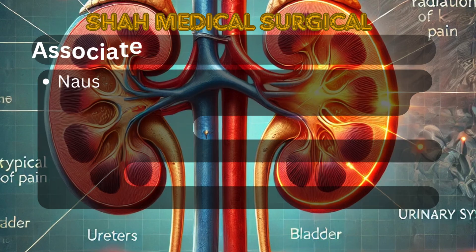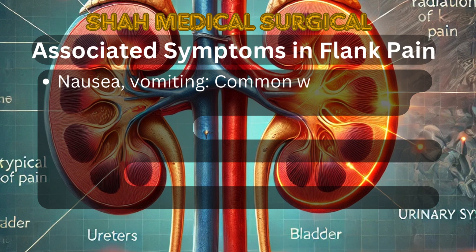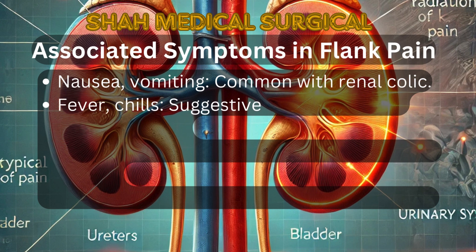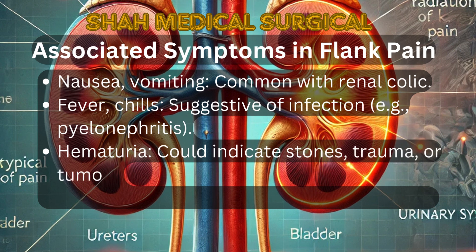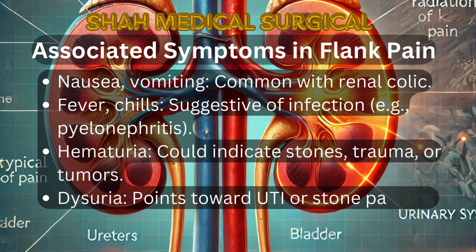Associated symptoms to ask about include nausea and vomiting, which are common with renal colic. Fever and chills may indicate an infection like pyelonephritis. Hematuria can suggest stones, trauma, or tumors. Dysuria often points to a urinary tract infection or stone passage.